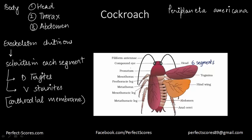The thorax is made up of three parts: the prothorax, mesothorax, and metathorax. The prothorax is covered by the pronotum. Each thoracic segment bears a pair of walking legs, giving a total of three pairs — six legs. The first pair of wings comes from the mesothorax and the second pair from the metathorax. The mesothoracic wings are called tegmina; they are opaque, dark, and leathery, covering the hind wings when the cockroach is not flying.